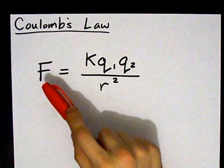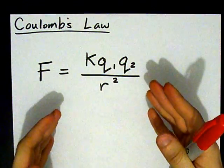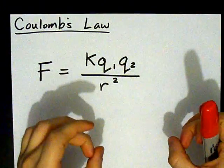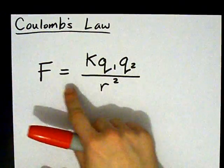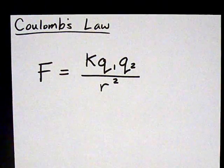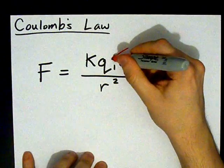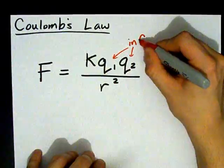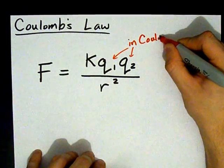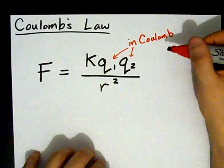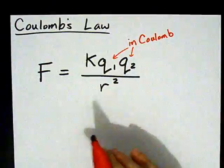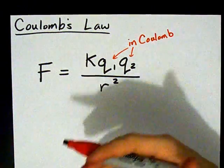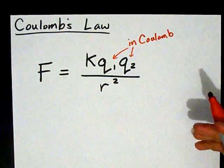The force between any two particles that have charge to them can be calculated using this formula. Q1 and Q2 are the charges on the two particles in Coulombs. A Coulomb is just a way you can measure charge, and we have an amount in Coulombs for electrons, protons, things like that.